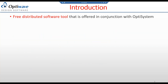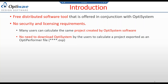OptiPerformer is a software tool which is free of charge. You download it from the OptiWave website. You need at least one OptiSystem license to create files for OptiPerformer and calculate them. There is no need for any security or licensing for OptiPerformer itself. You need a single OptiSystem license to operate and run files, and you can use OptiPerformer on as many machines as you want for the same project — there is no limit on the number of users.